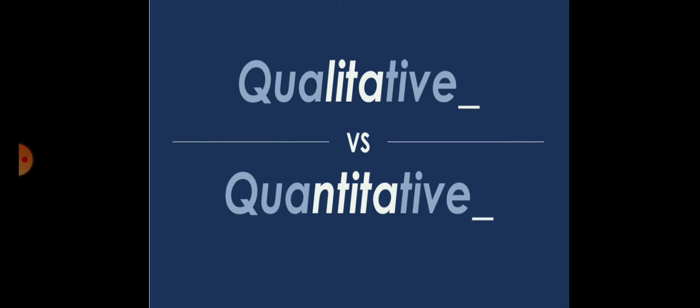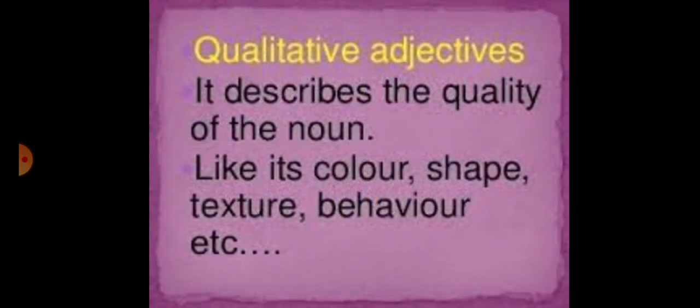I hope you have in mind, viewers - main aksar aap se kehti hoon ke word ko focus karein. Word hi aap ko uske peeche chhupa concept bada denge. Jaise ke word kya hai - qualitative, jo quality se nikla hai. Quality means khubi, sift. Next is quantity - matlab miktar. Theek hai, so chalein ab inko one by one hum discuss karein. Qualitative adjectives are those which describe the quality of noun.